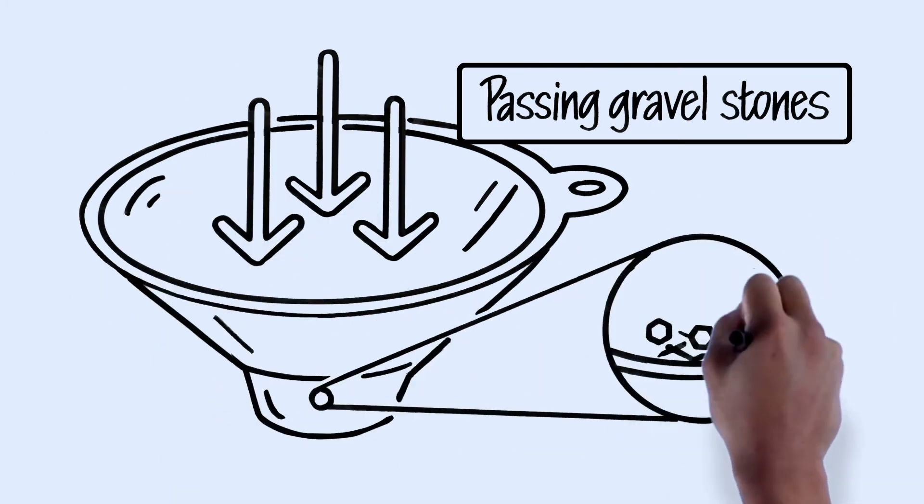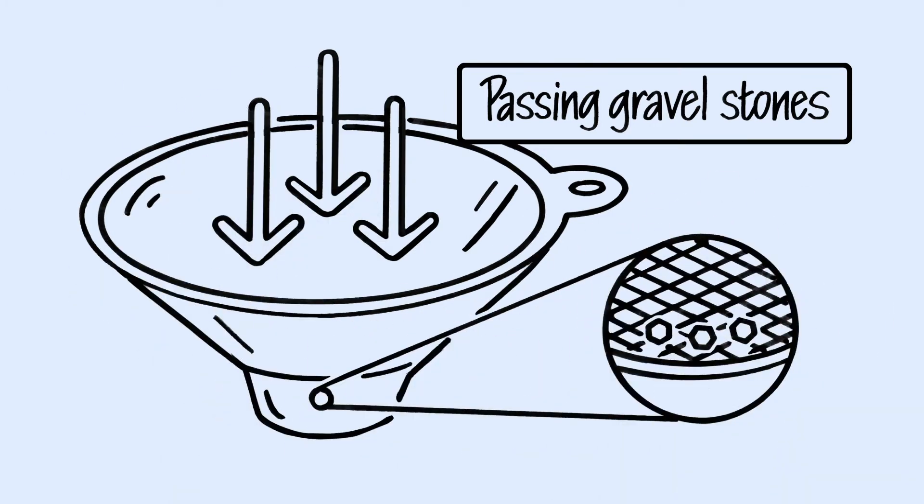If Tyler suspects he might have them, he urinates through a stone filter that captures the stones.